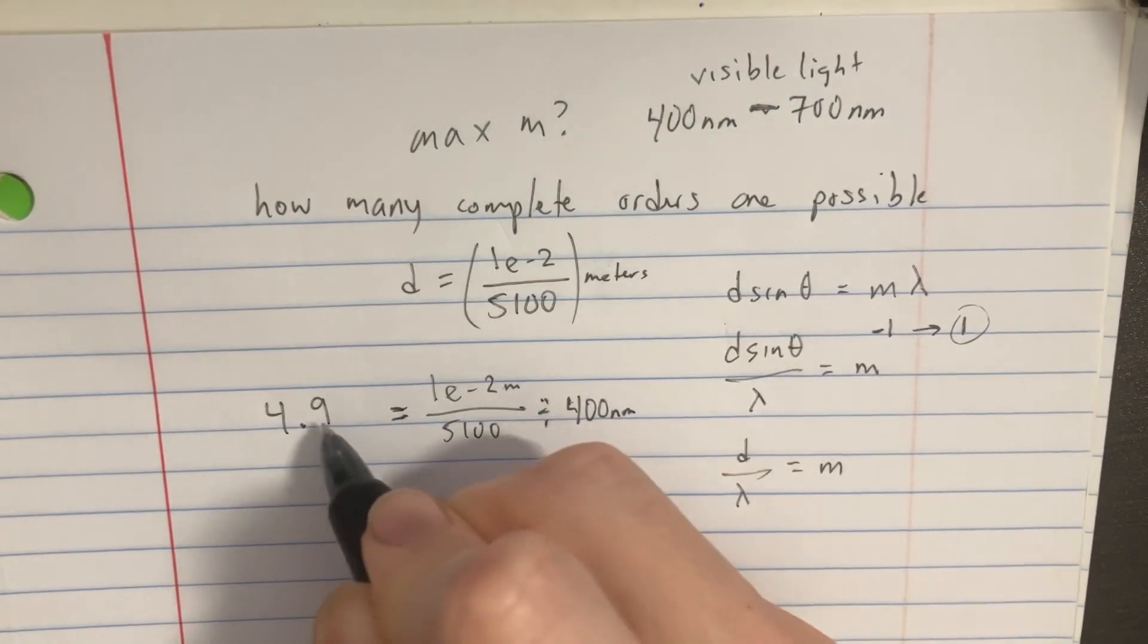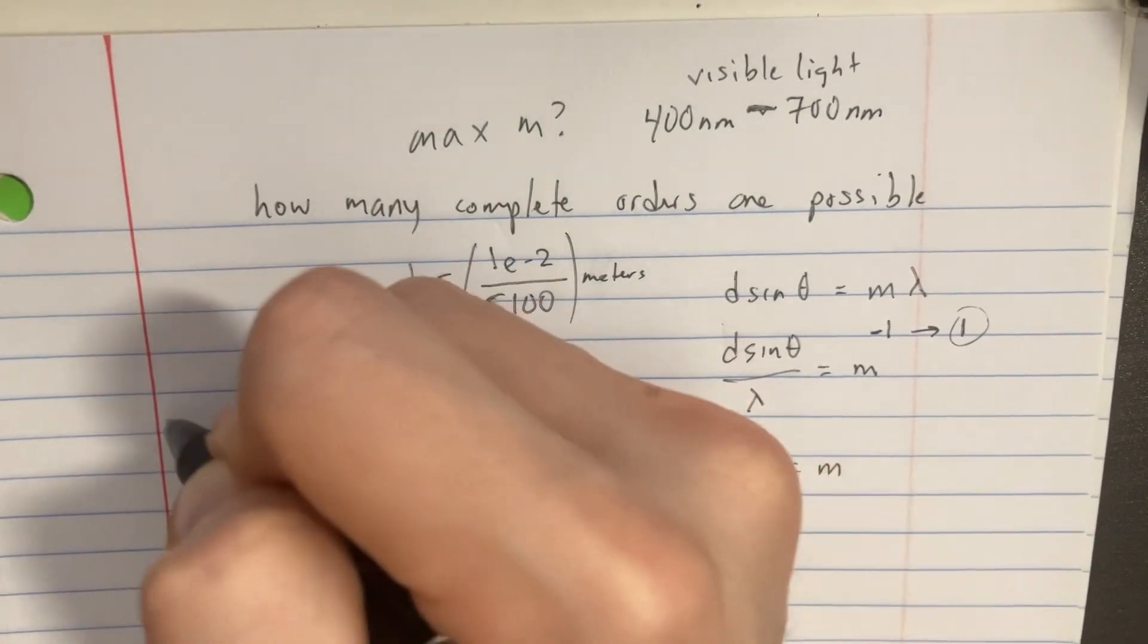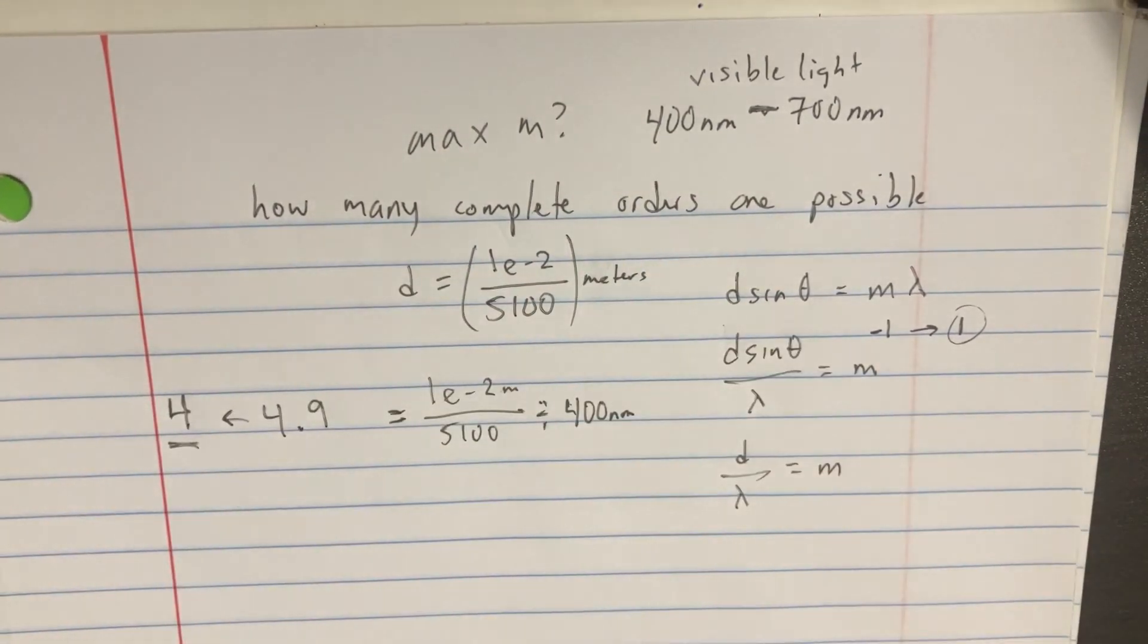We know that M's can't really be any decimals. So we have to round this out to four. So that's what we know is possible there.